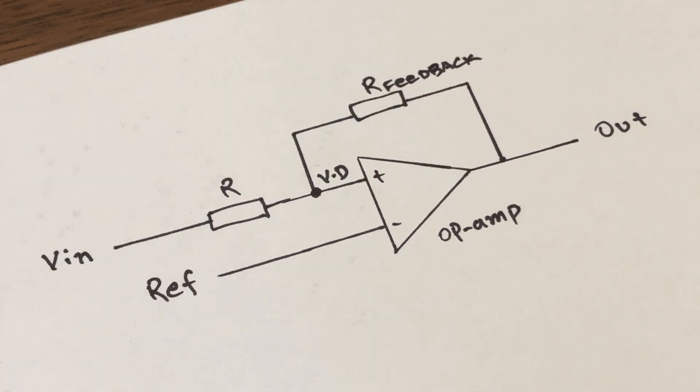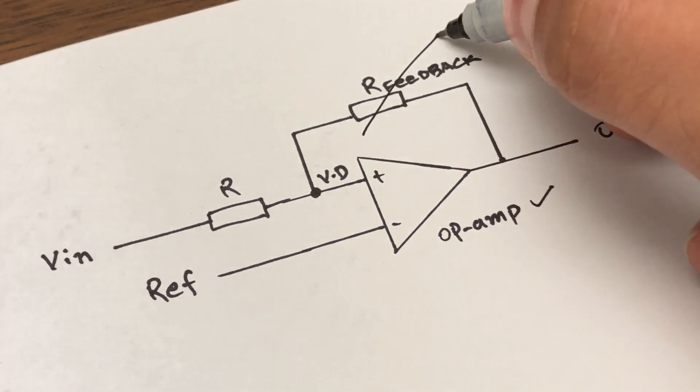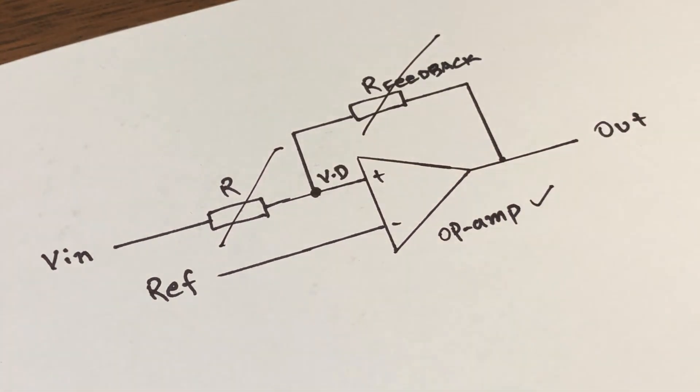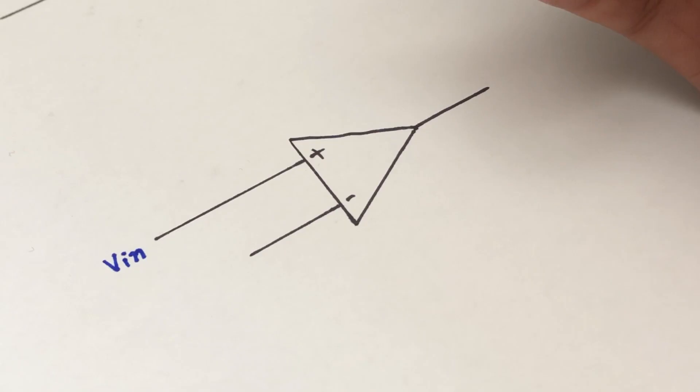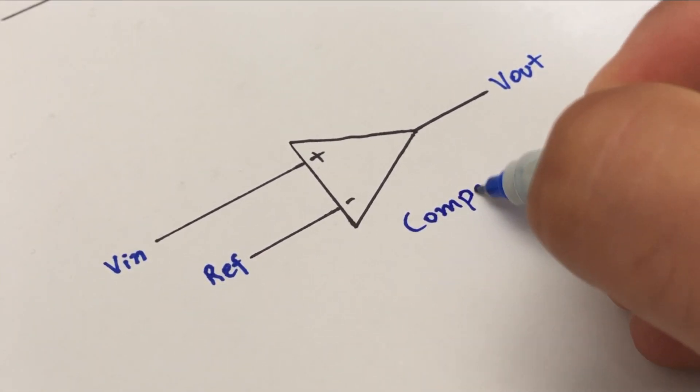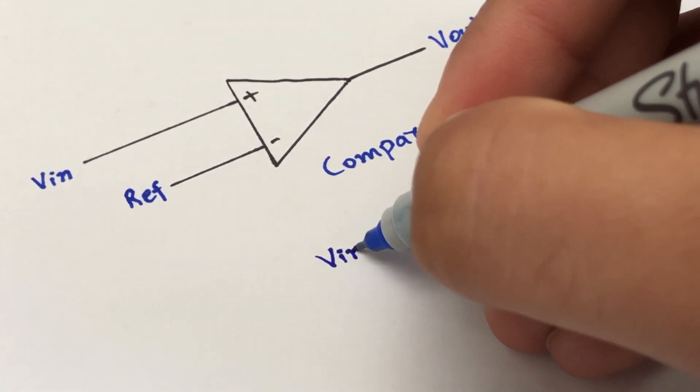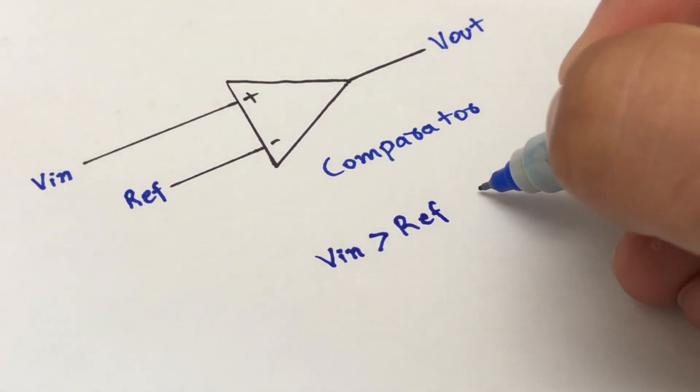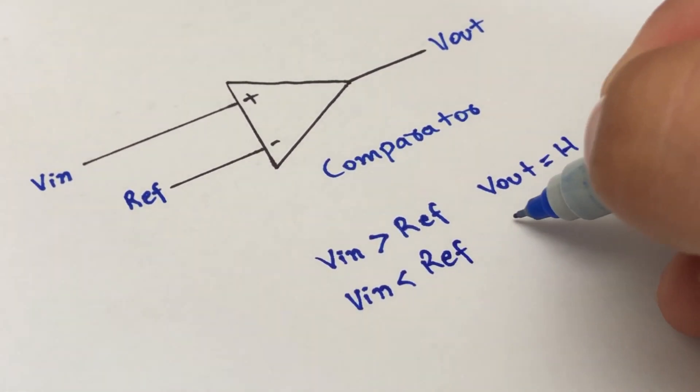To understand the working of a Schmitt Trigger, let's first start from the basic building block, which is the operational amplifier, and forget about the feedback and the input resistor. So let's take the resistors out of this circuit and simply connect the input to its non-inverting terminal and the reference to the inverting input. Now some of you might recognize this circuit because this is now a simple comparator. If the input goes higher than the reference voltage, the output of the comparator turns high, and if the input goes lower than the reference, the output of the comparator stays low.